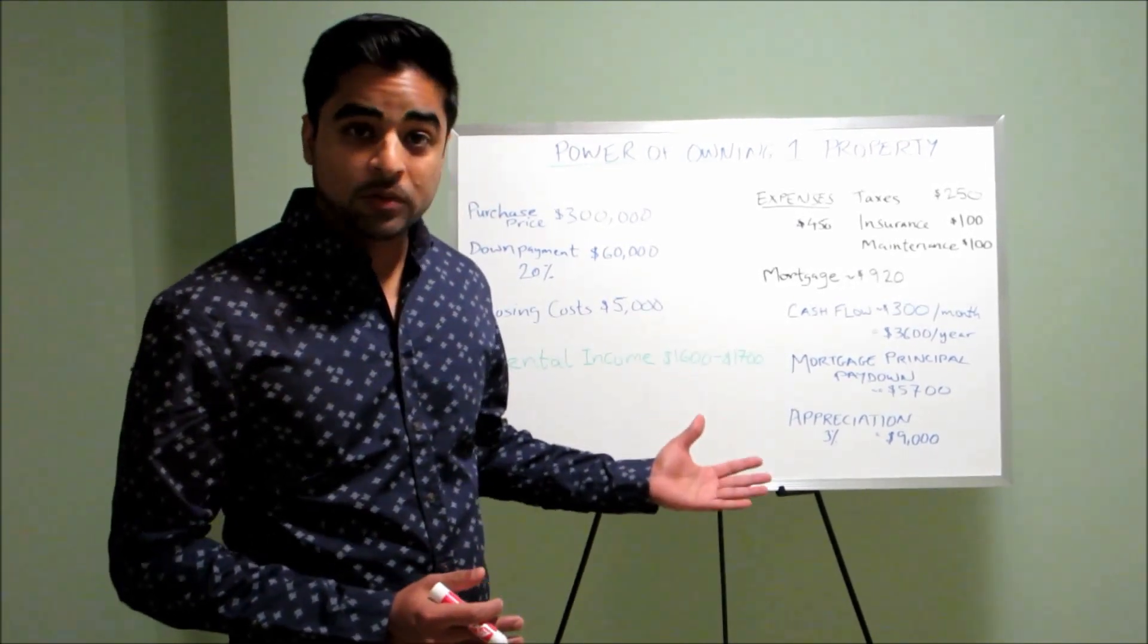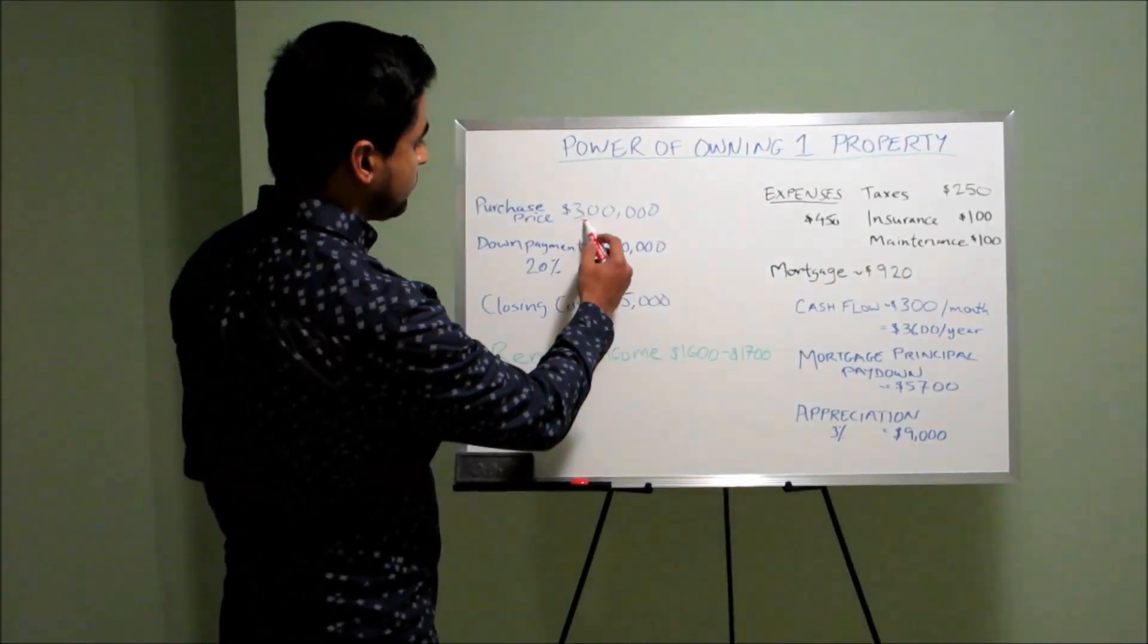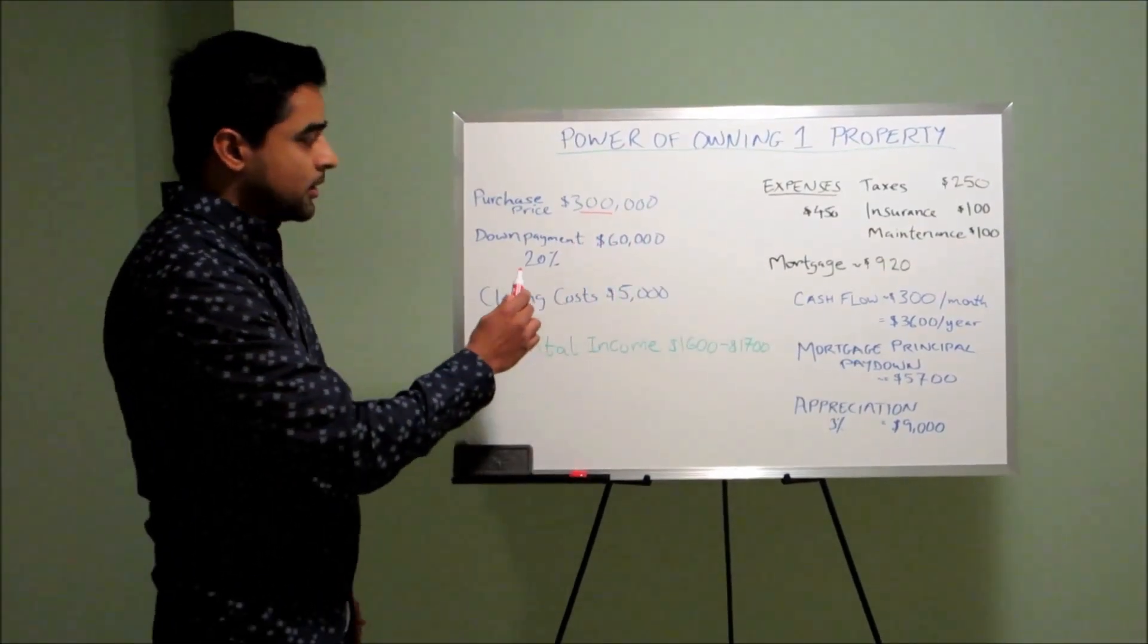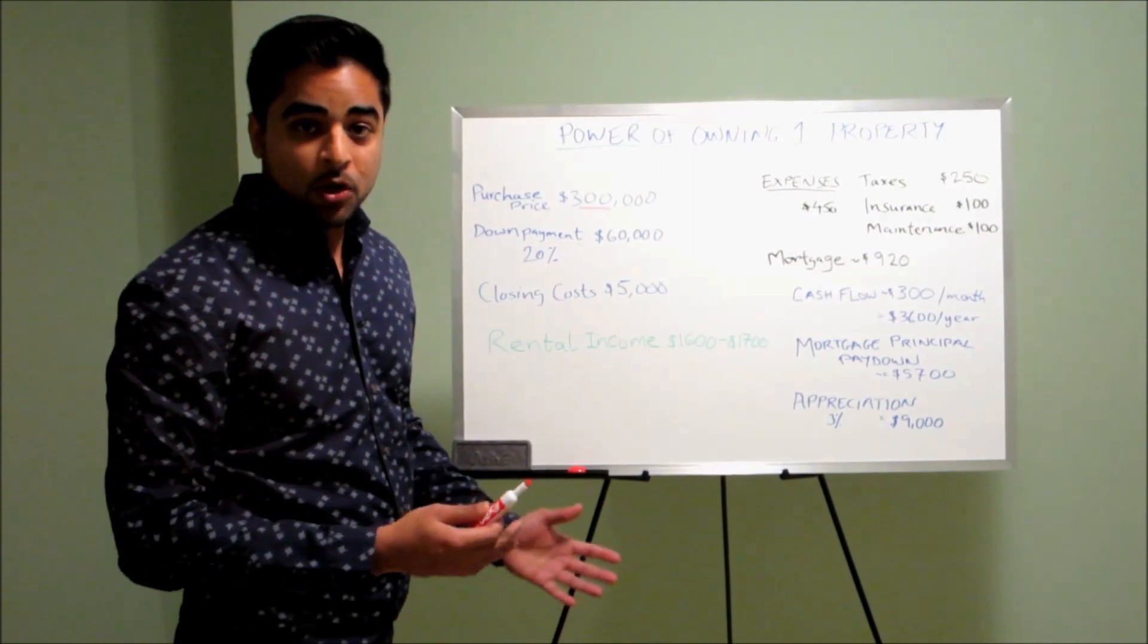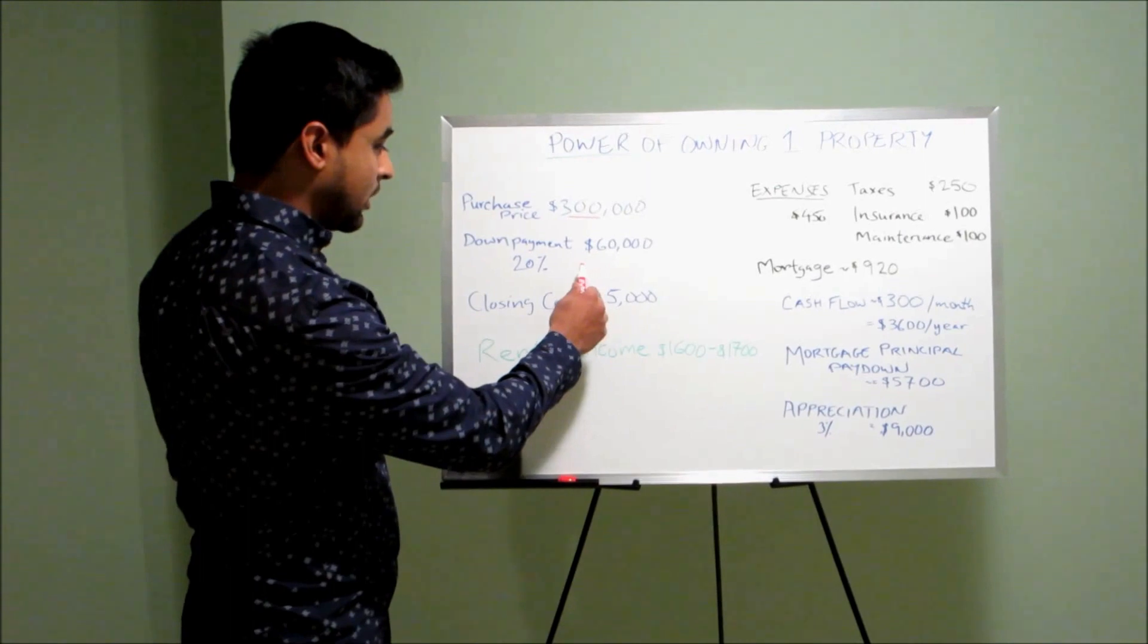It's going to be approximately $300,000. So purchase price is $300,000. The banks are going to want you to put down 20% as your down payment, which is going to be $60,000.